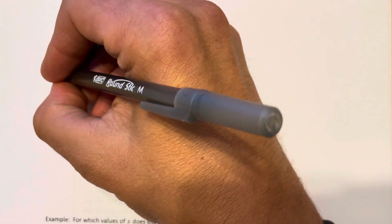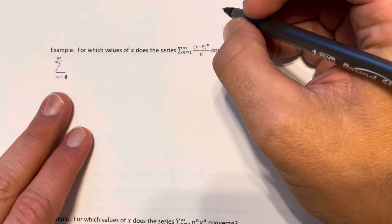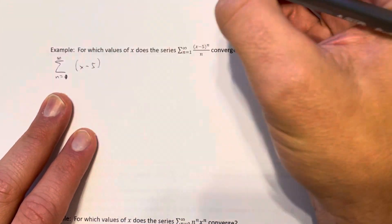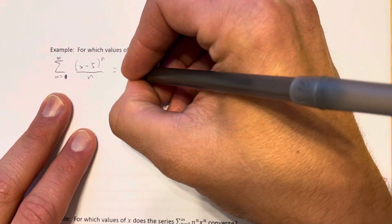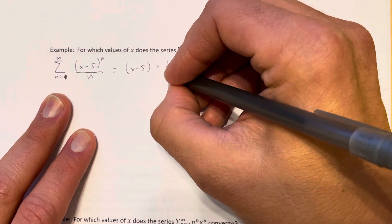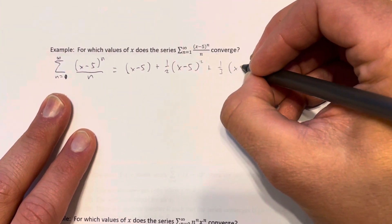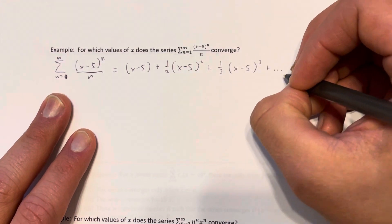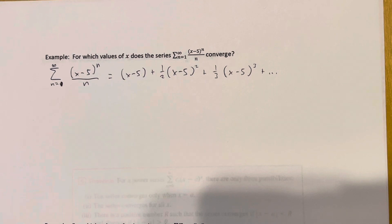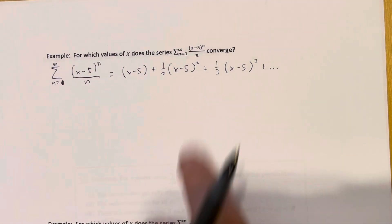We can write out the first few terms of this series. When n equals 1, we get (x minus 5). When n equals 2, we get one half times (x minus 5) squared. When n equals 3, we get one third times (x minus 5) cubed, and so on. Generally, we won't need to write out the terms to answer the convergence question, but it's useful to see what the expansion looks like.